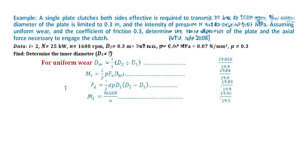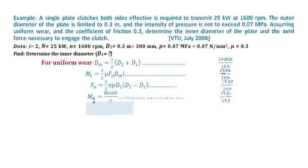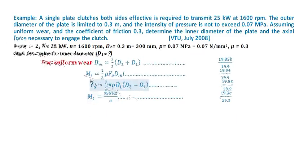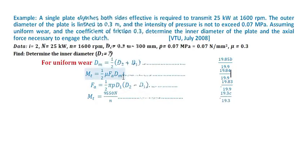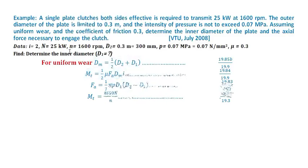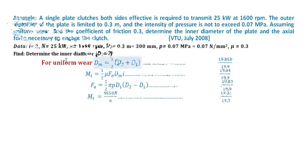Mt equals 9550 times N divided by n. This is the formula on page number 19.3. First you have to find out mt, then substitute in place of fa. Substitute the dm formula and i equals 2, you will get directly d1.